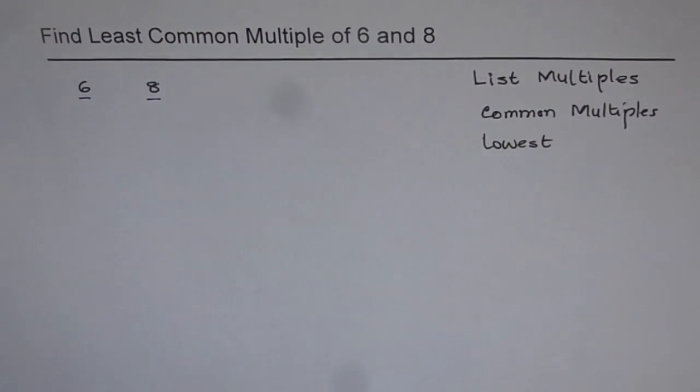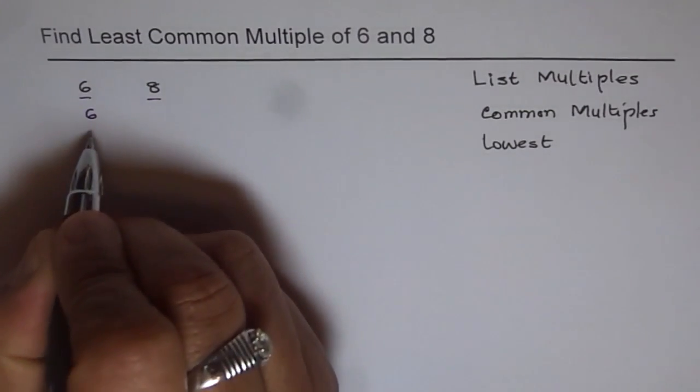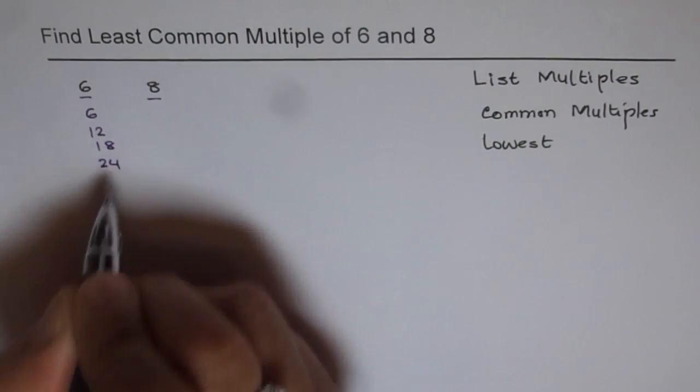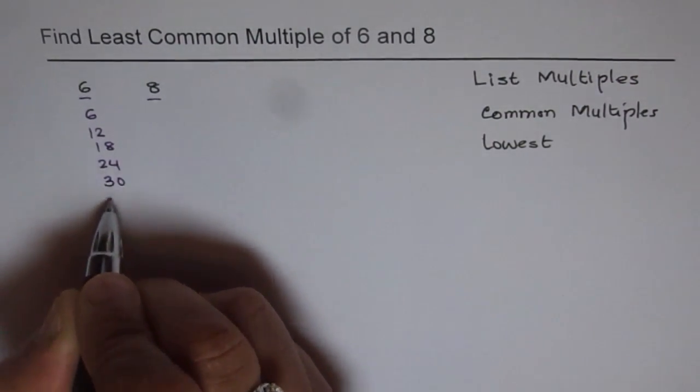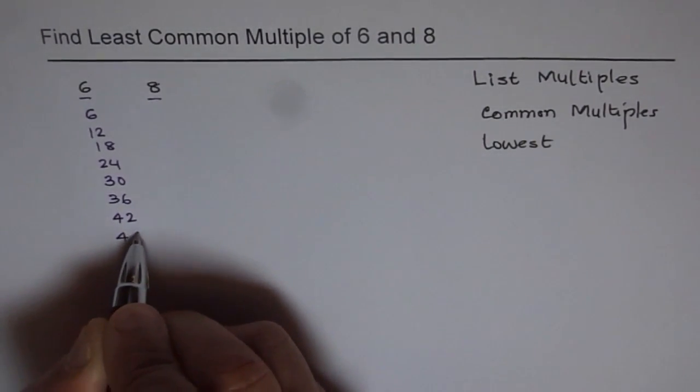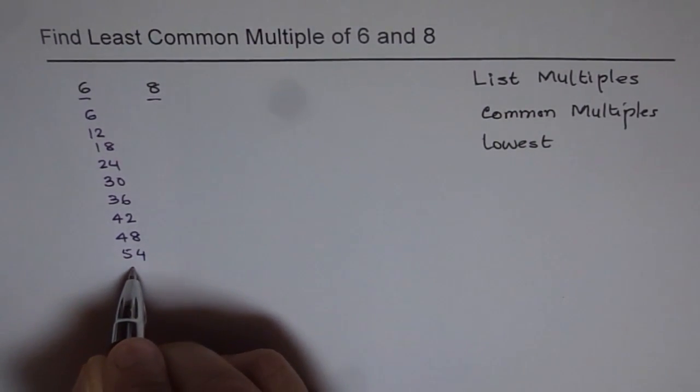And now let's figure out what are their multiples. So multiples of 6 are like 6 times 1, 6 times 2. So these are the multiples of 6. So they are 6, 12, 18, 24, 30, 36, 42, 48, 54. Let's go up to 10.